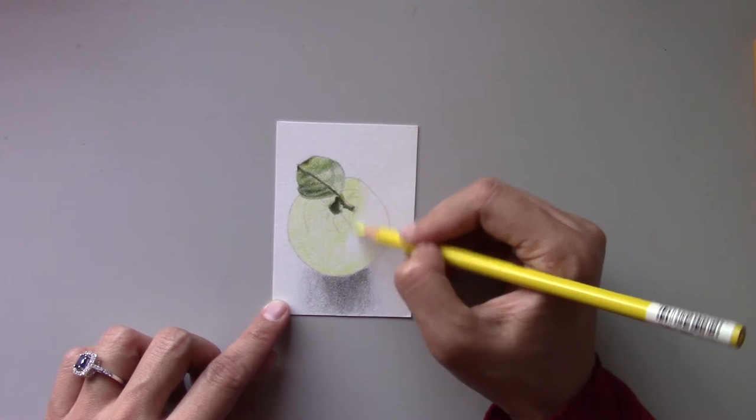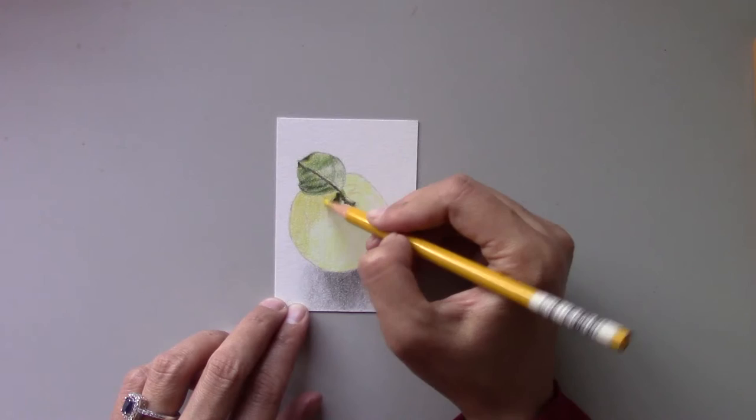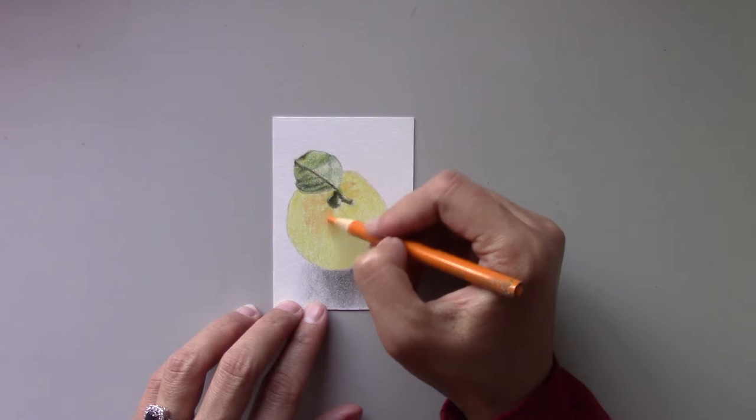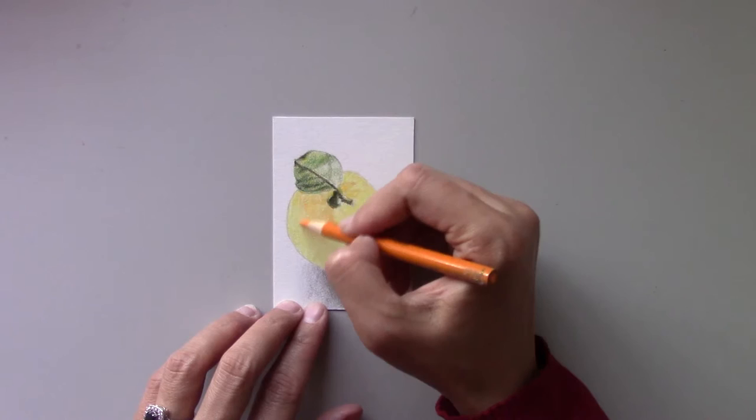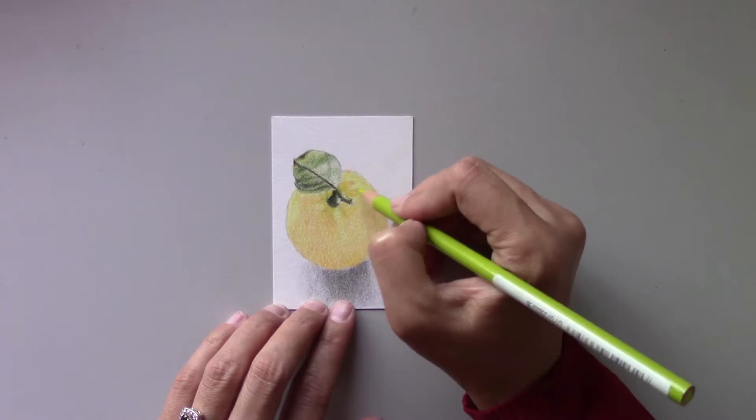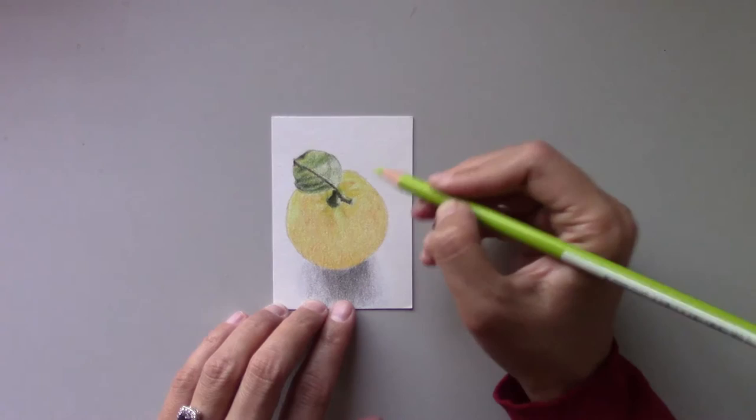Now, let's move on to the lemon. I give a light wash with lemon yellow on the lemon with a vertical stroke. Then layer with the next color, canary yellow, as a second wash for a richer yellow tone. I build up the lemon with more color using yellowed orange and slightly model the shadows on the fruit. Now layer chartreuse on the lightest areas of the lemon to give a hint of green.